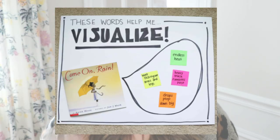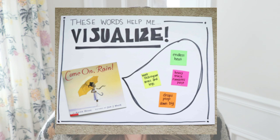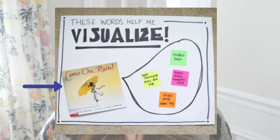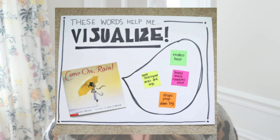I explain to students that when we are making our own visualizations we are really taking into account all five of our senses to create this image, and the authors that write these stories are actually using vivid imagery based on all five senses to help us form these mental images. In teaching this I definitely like to model and talk through this first, and I like to do that with an anchor chart like this one. It's basically a big speech bubble that says 'these words help me visualize,' and over the course of a week or so I like to pick different mentor texts. As I read aloud I think aloud and point out different sensory words the author uses that really help me visualize.